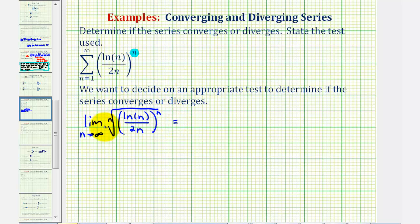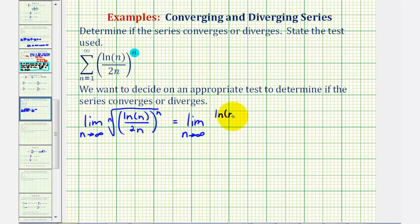We're taking the nth root of this fraction raised to the nth power, so the radical and the exponent will undo each other, leaving us with the limit as n approaches infinity of natural log n divided by 2n.